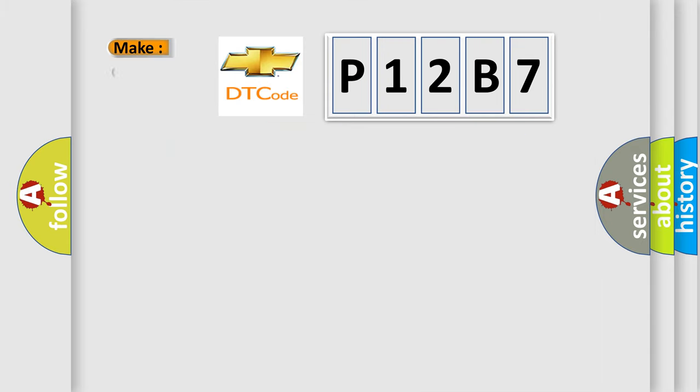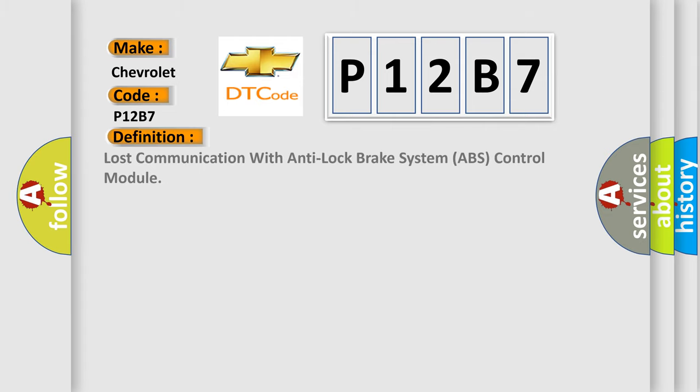So, what does the diagnostic trouble code P12B7 interpret specifically for Chevrolet car manufacturers? The basic definition is Lost communication with anti-lock brake system ABS control module.